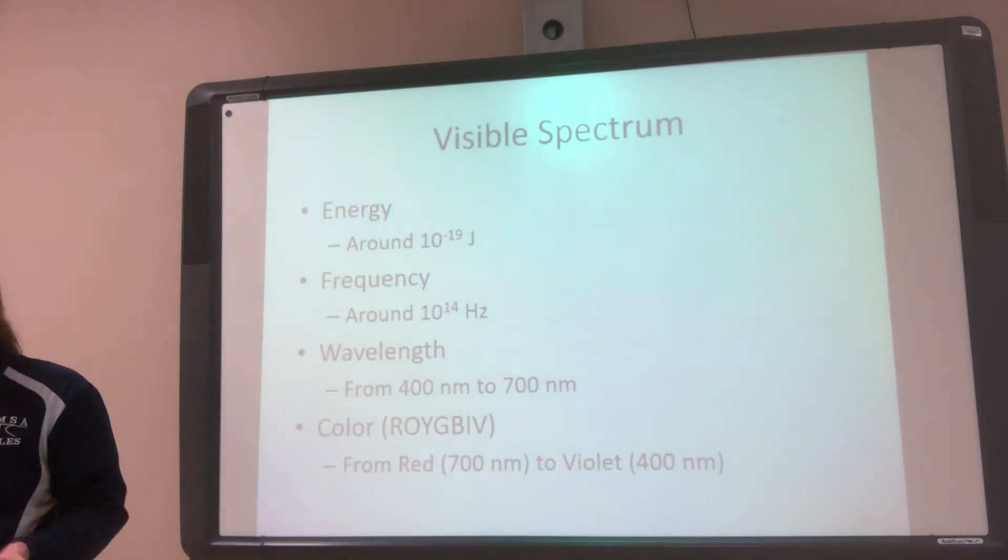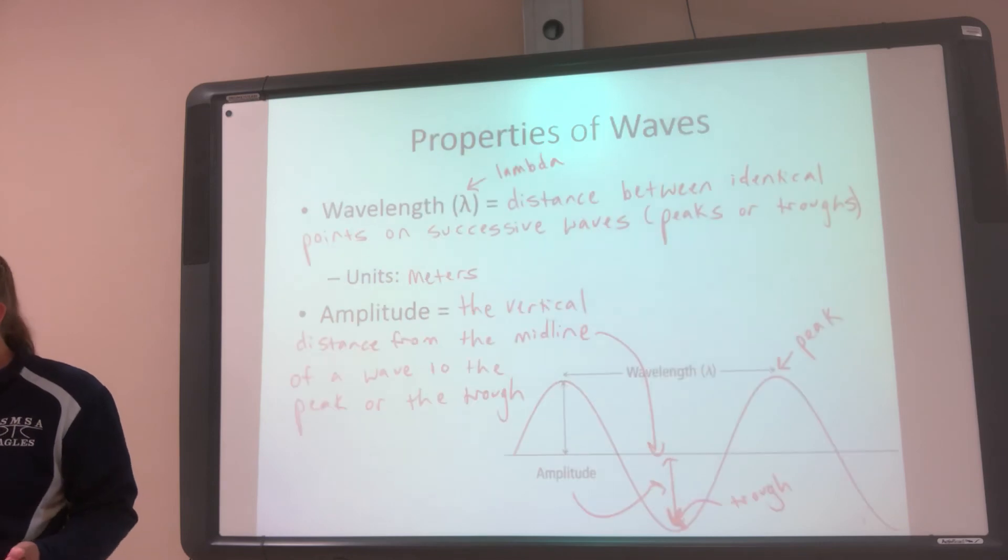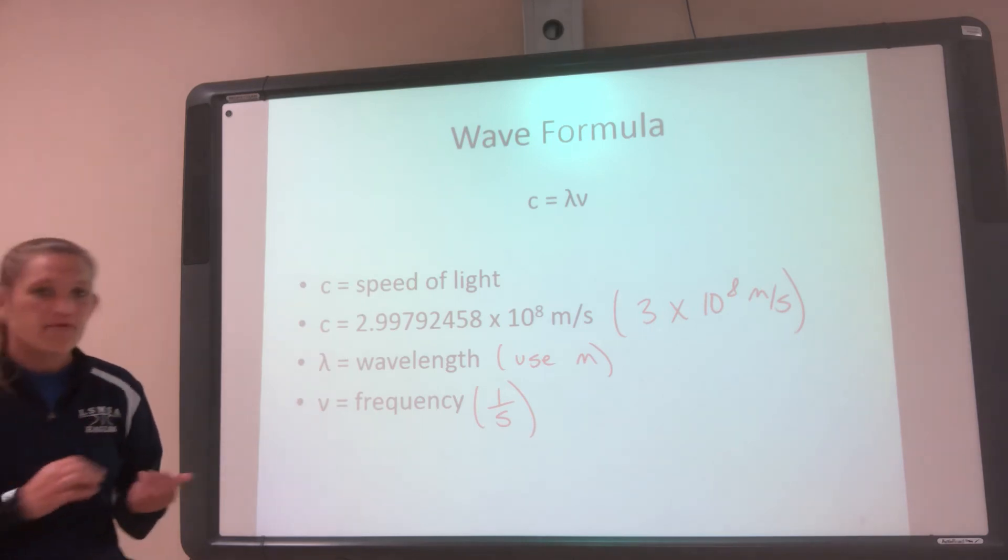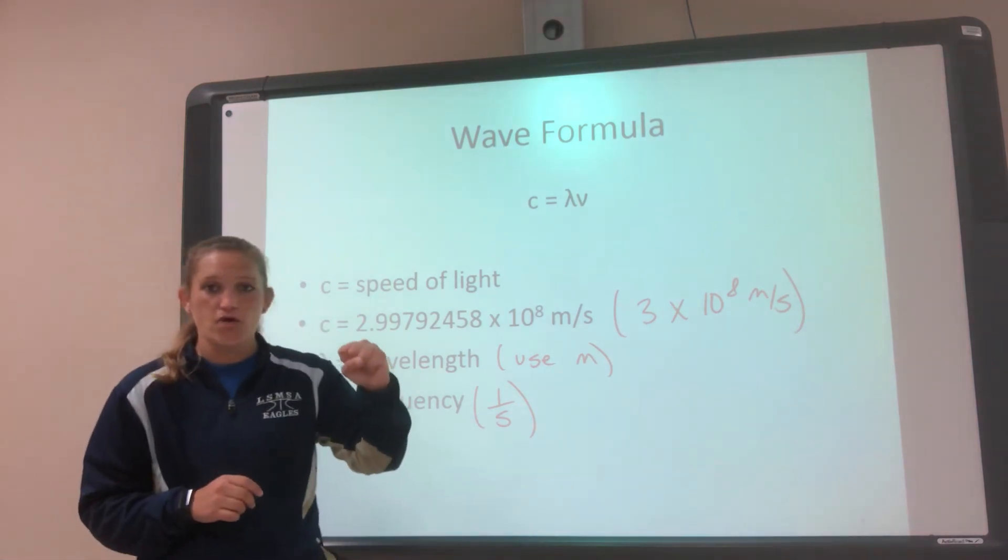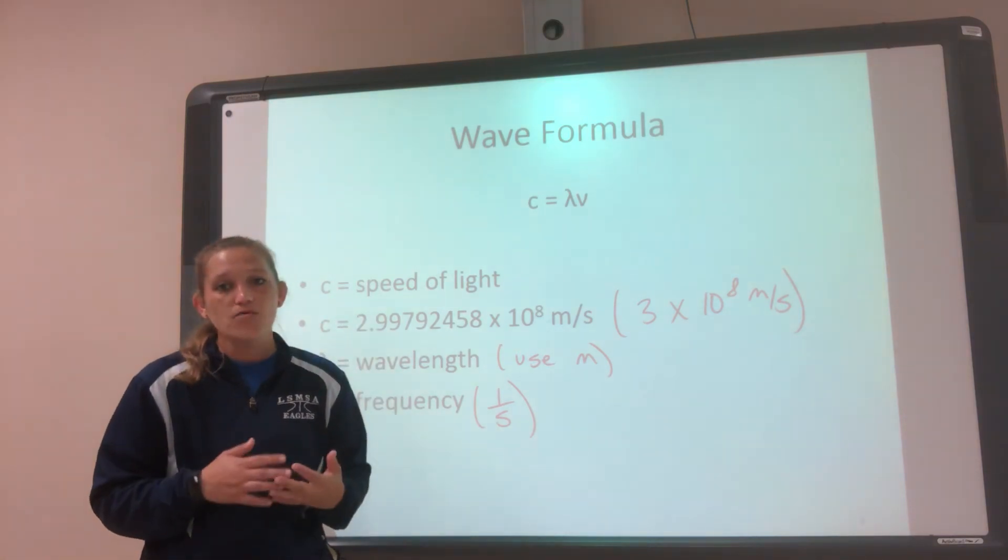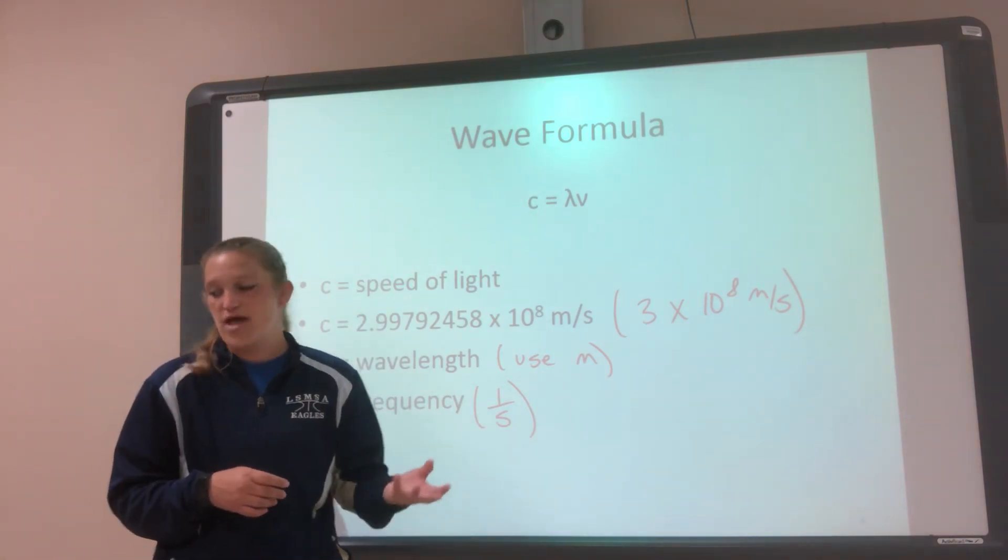Okay, so we said that our light can act like a wave. We introduced the wave, we talked about the wave formula. But I said that light can also act like a particle, like a single little round particle moving around. So now I want to talk about the particle aspect.